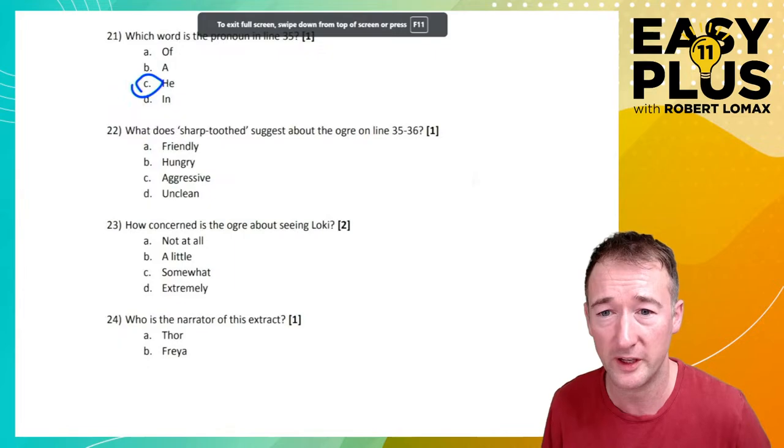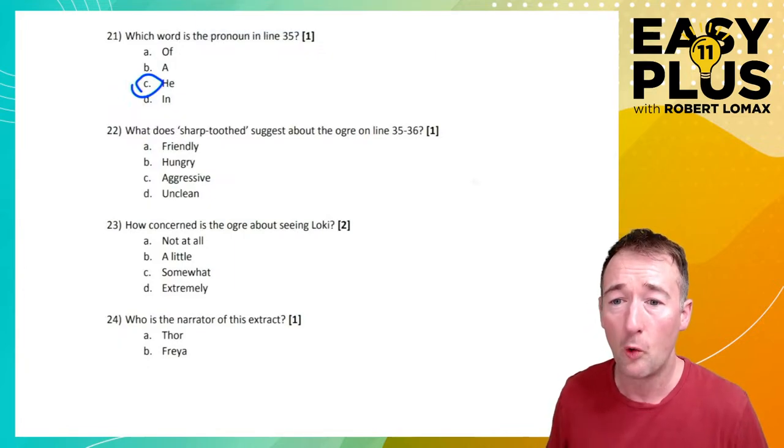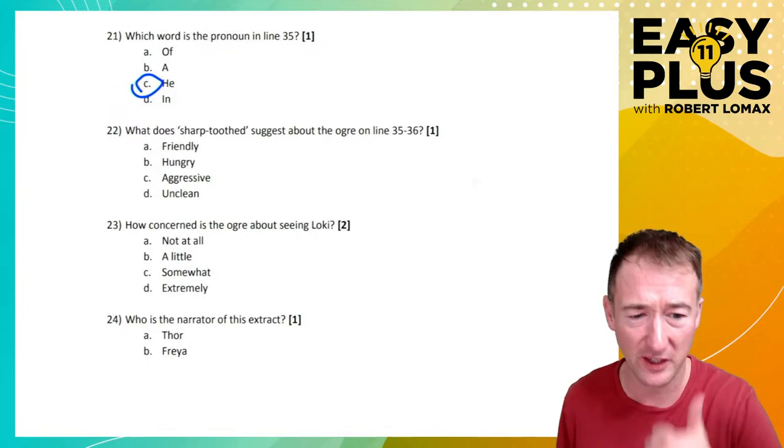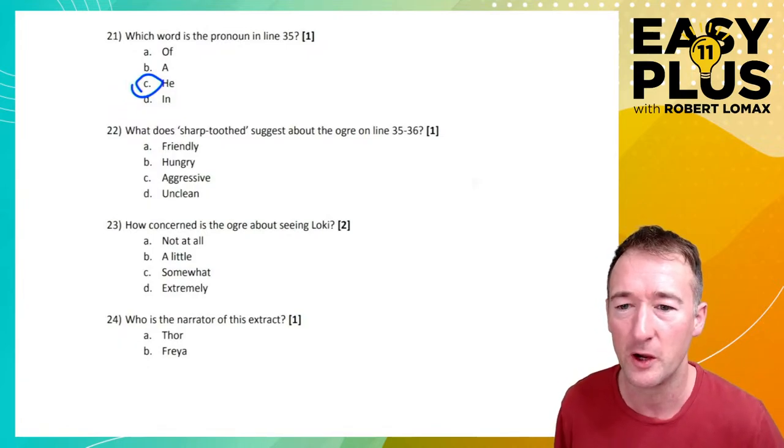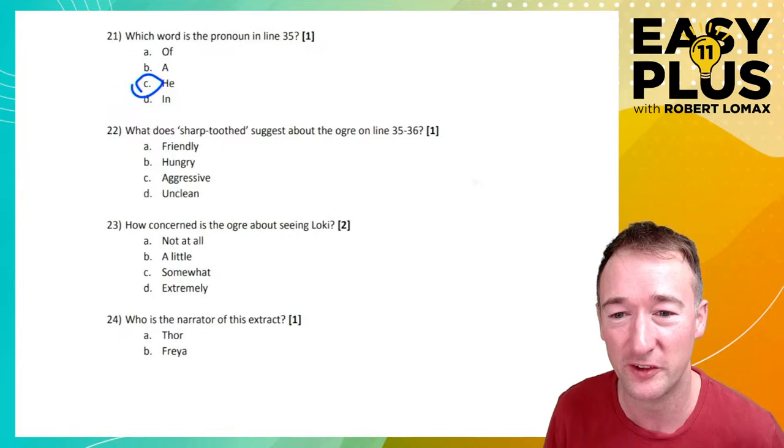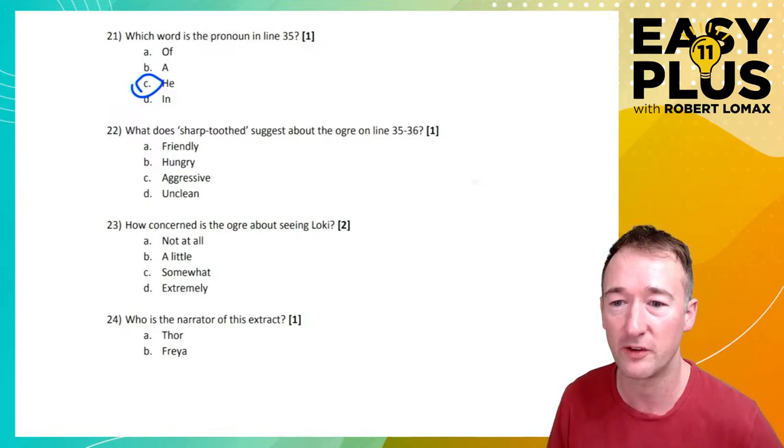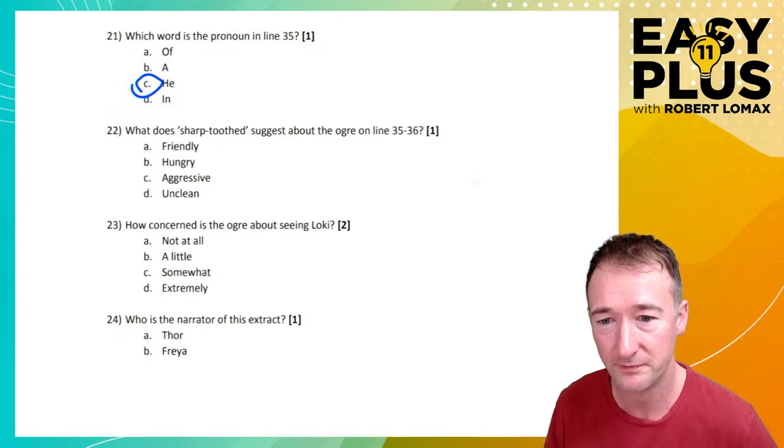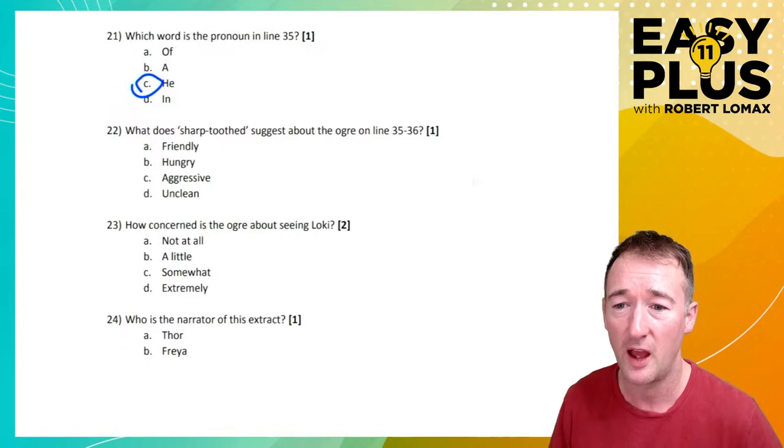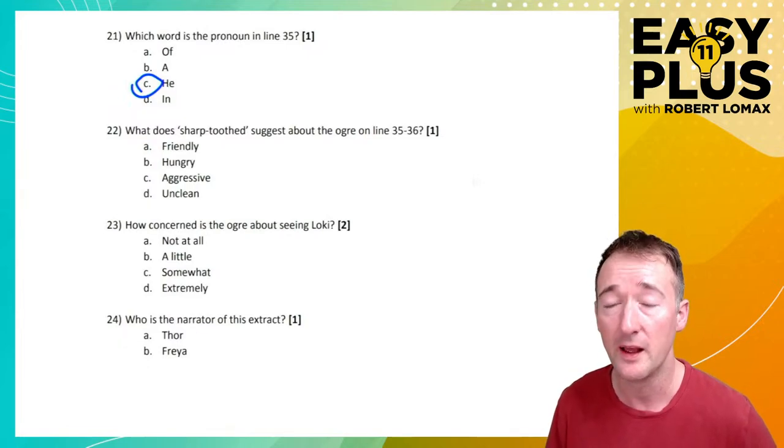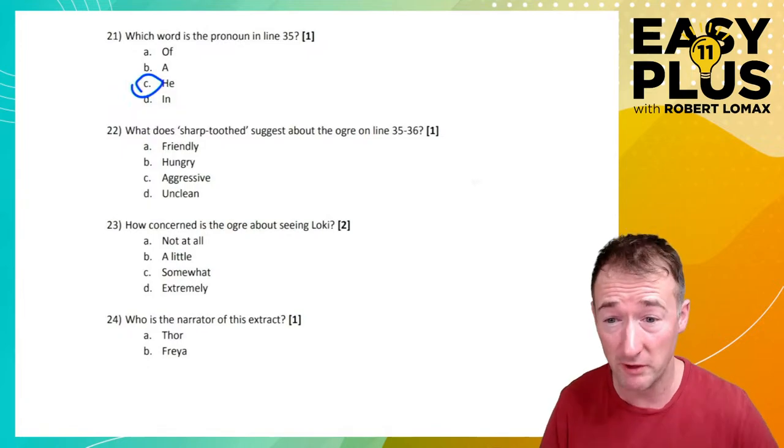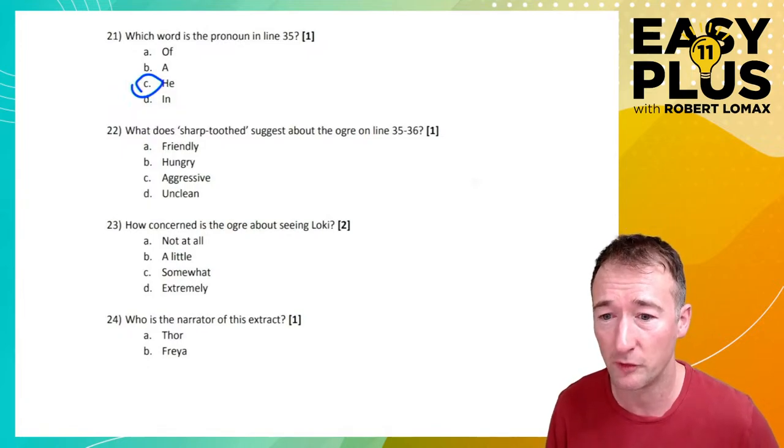Good. There we are. I don't want to exit full screen. Go away. Pop up. What does sharp-toothed suggest about the ogre? Online. First of all, it's lines. And secondly, you say in lines, not on lines. So, we're not doing well here. What does sharp-toothed suggest about the ogre in lines 35 to 36? Friendly, hungry, aggressive, and clean. Unlikely to be friendly. I don't see why it would be unclean, either. Having sharp teeth isn't to do with these things. Hungry and aggressive seem more likely. It's worth having that sort of pre-screening before you look at the text.